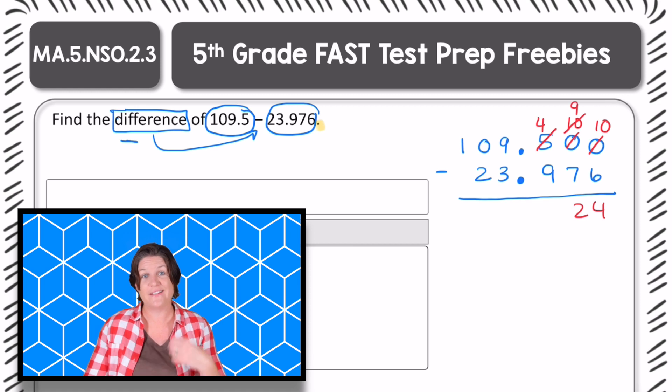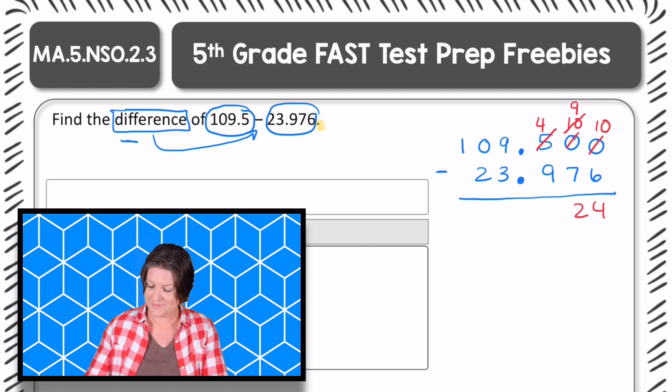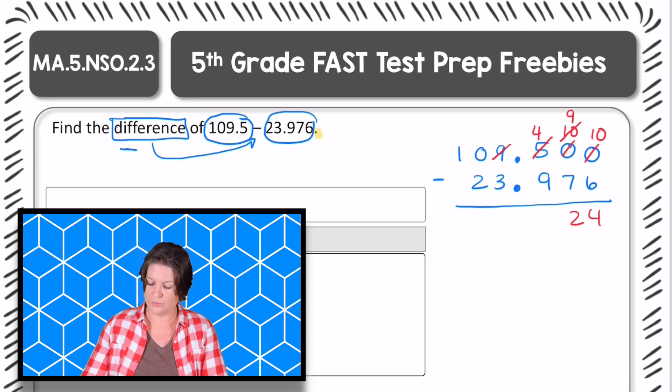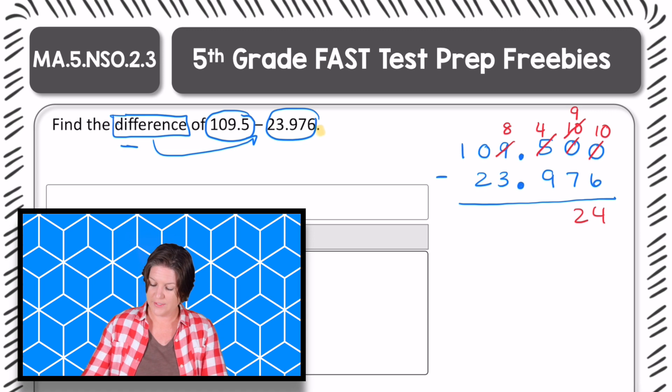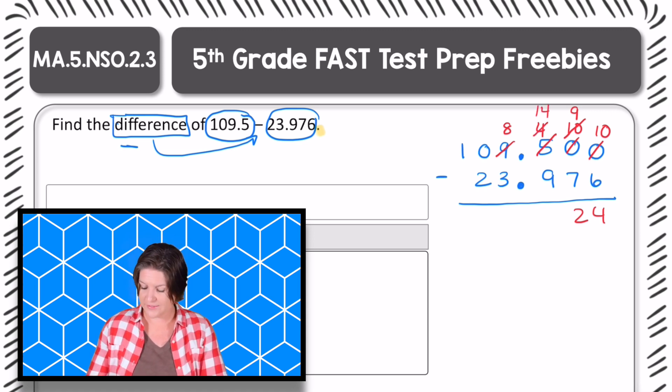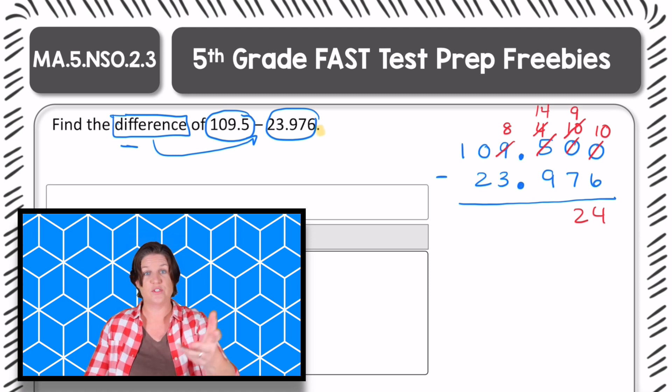Four tenths minus nine tenths is? I need to regroup, right? So let's go over to the ones place. We'll regroup. Take one of the ones and regroup it over here. So now it's fourteen tenths minus nine tenths, which is five tenths.